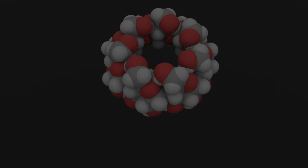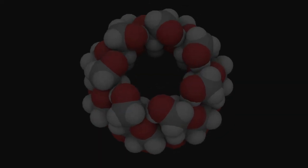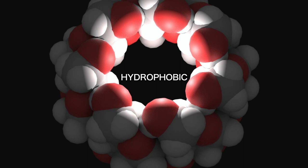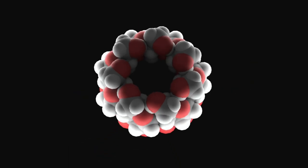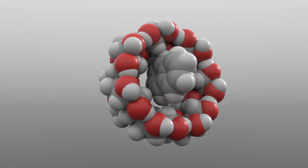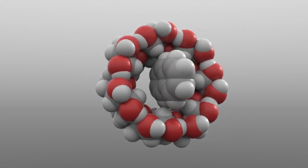Cyclodextrin has a natural ability to trap other molecules because on the inside, it's hydrophobic, or water-repellent, and on the outside, it's hydrophilic, meaning it's attracted to water. With its characteristic doughnut shape,